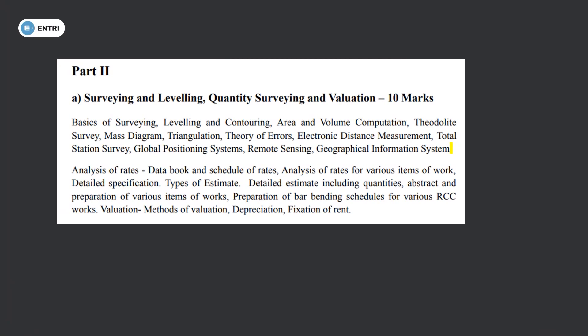Part 1 covers Mechanics and Structural Analysis plus Fluid Mechanics and Water Resources. Part 2's first subject is Surveying and Leveling, Costing, Surveying and Valuation — similar to AE exams. Surveying basics, leveling and contouring, leveling instruments, correction for curvature and refraction, area and volume computation. Theodolite survey and basic working methods. Mass diagram, triangulation, theory of errors. EDM (Electronic Distance Measurement), Total Station, GPS, Remote Sensing, and GIS.